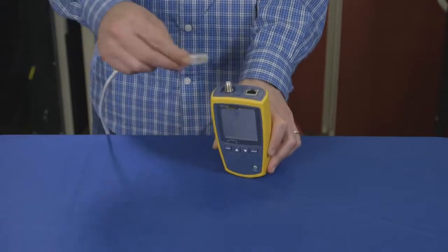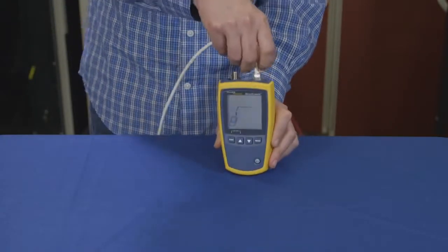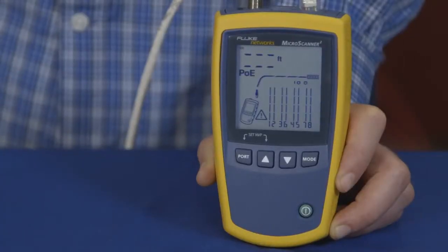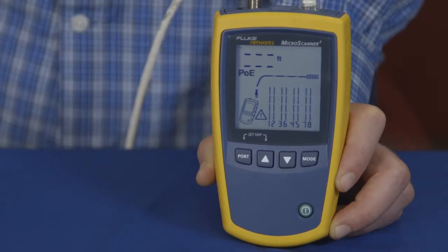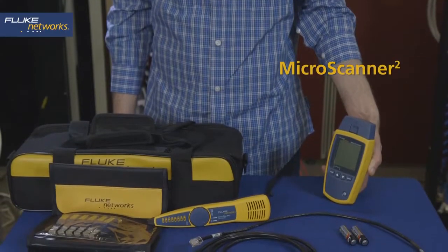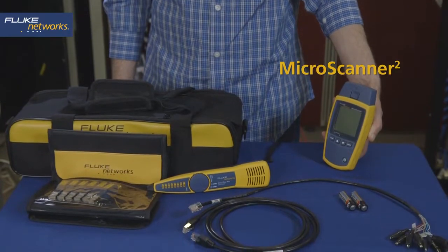Here's an example of a drop that's plugged into a PoE switch. The PoE is displayed and the speeds that the switch is offering are shown at the top. The Microscanner 2 kit from Fluke Networks.